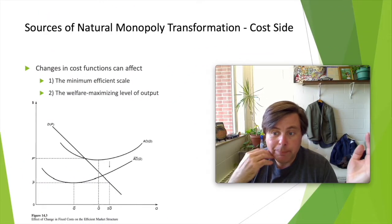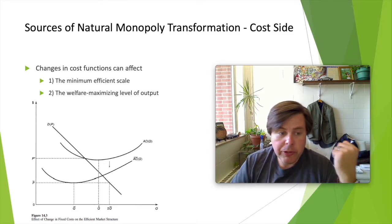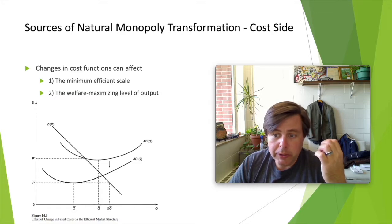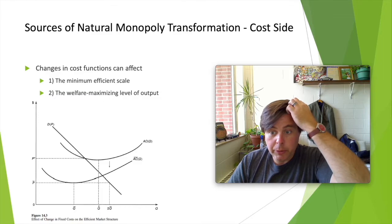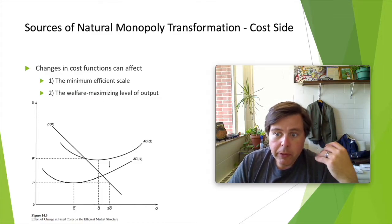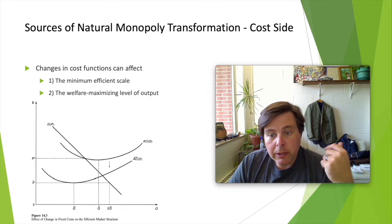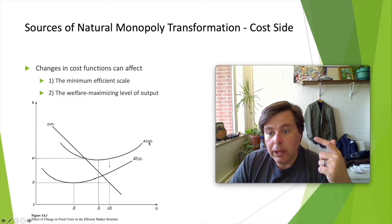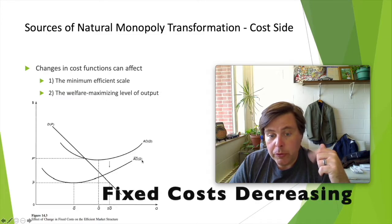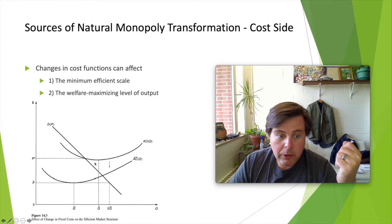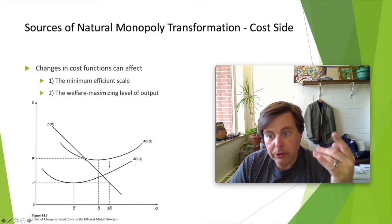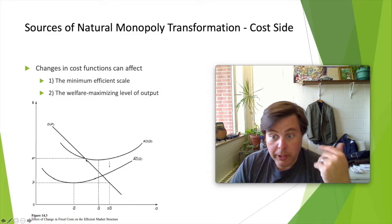Flipping over to the cost side: let's say we have a situation where fixed costs decrease. We know from our previous lectures that fixed costs are very important to understanding natural monopoly situations. If fixed costs decrease, what we can infer is that there's going to be a change to the minimum efficient scale. So let's say we start off with AC(Q), and then due to fixed costs decreasing, we move to AC bar. Initially, the minimum efficient scale was Q hat, and now under the new situation, it's Q bar.